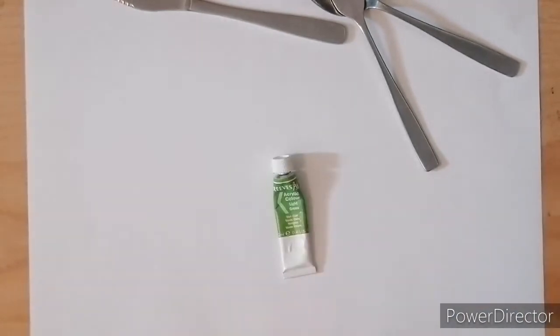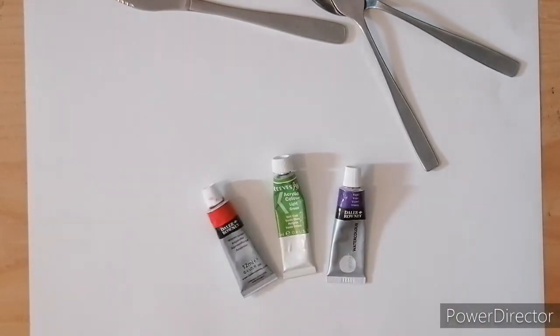Right. We also need something to paint with. A knife and fork and spoon. And some paint for this final piece. I think I'm just going to use three colors. I'm going to go for the light green, a nice purple, and a deep red. And I think that's going to suffice. All right.